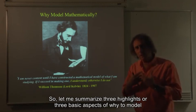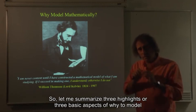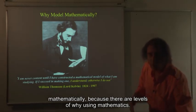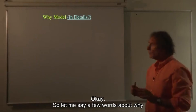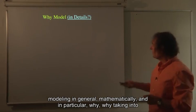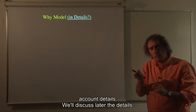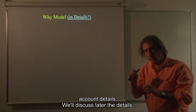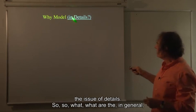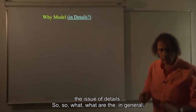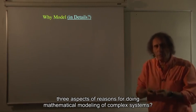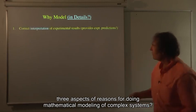But eventually, only after they wrote the mathematics of the spikes, we can very clearly say that we understand the spike. So let me summarize three highlights or three basic aspects of why to model mathematically. Because there are levels of why using mathematics. So let me say a few words about why modeling in general, mathematically. And in particular, why taking into account details. We will discuss later the details. But I want to discuss the general notion of modeling or theory and also discuss the issue of details. So what are the, in general, three aspects of reasons for doing mathematical modeling of complex systems?